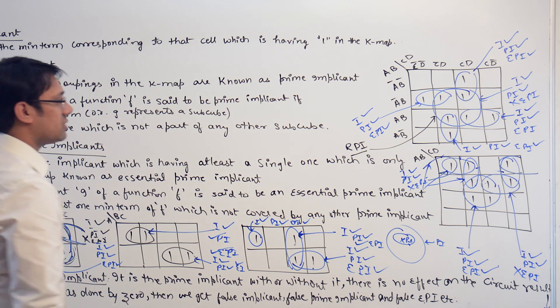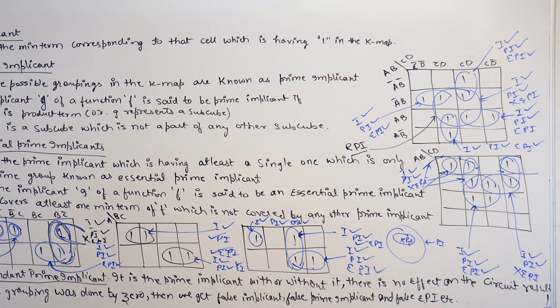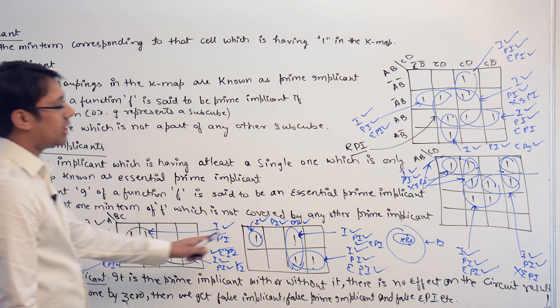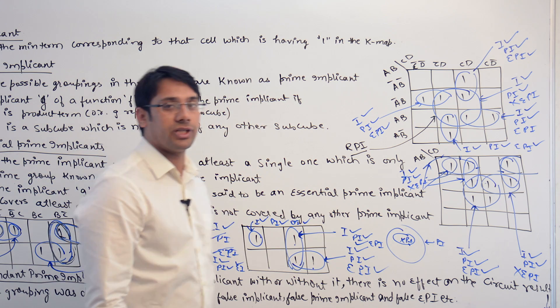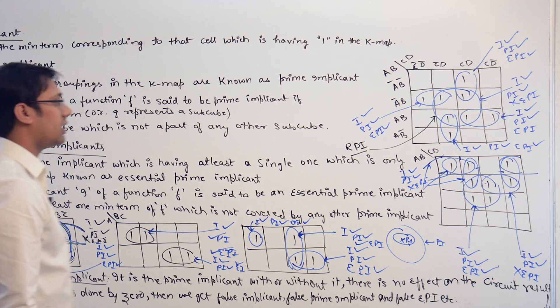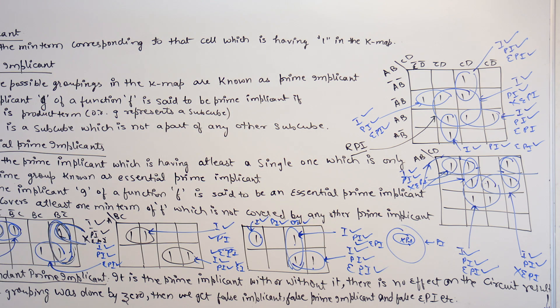All the other subcubes are important. We can also find redundant prime implicants in these other K-maps as well, but for that we need to understand how to find a redundant prime implicant.